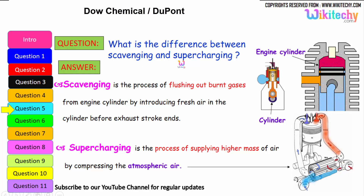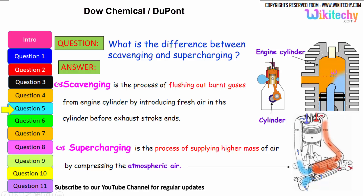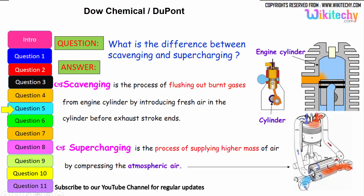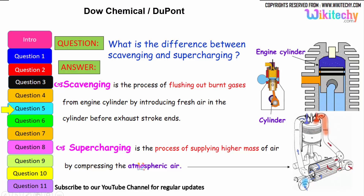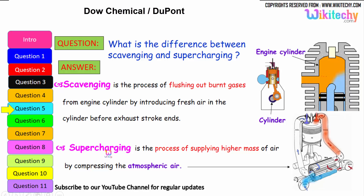What is the difference between scavenging and supercharging? Scavenging is the process of flushing out the burnt gases from the engine cylinder by introducing fresh air before the exhaust stroke ends. Supercharging is the process of supplying high-density masses of air by compressing it above atmospheric pressure — high pressure air is injected into the cylinder.